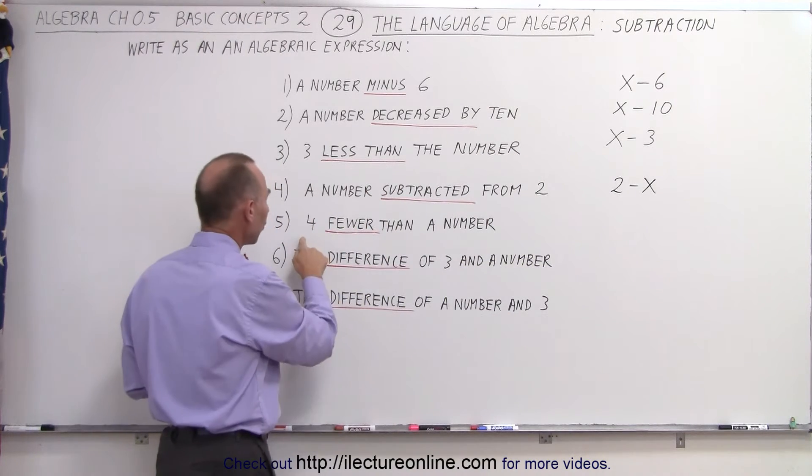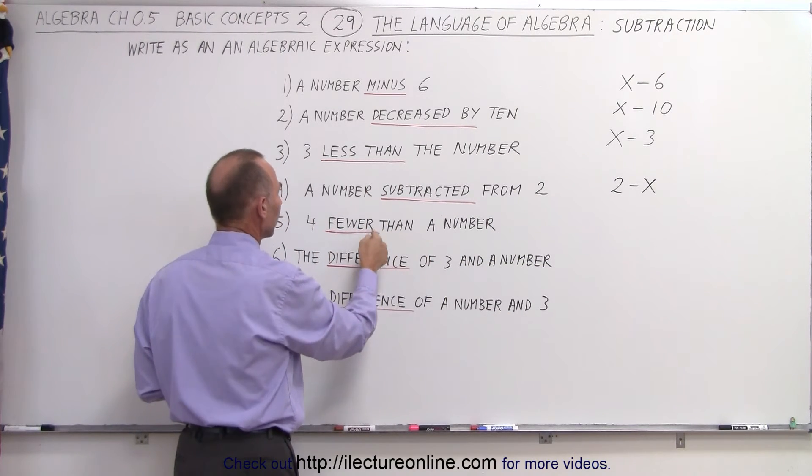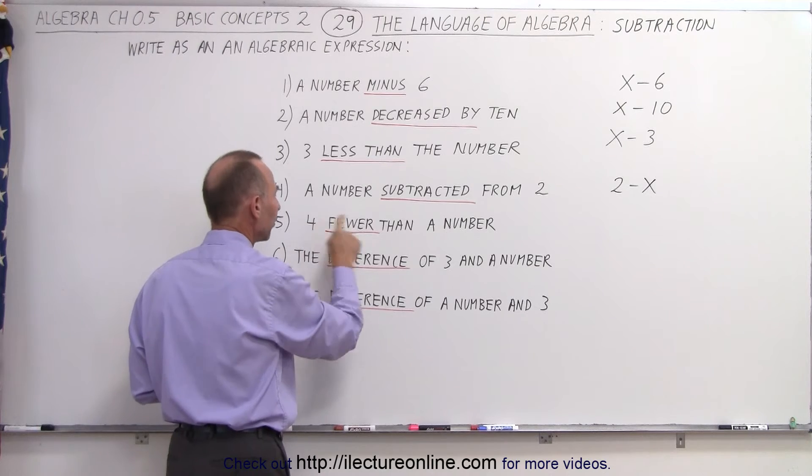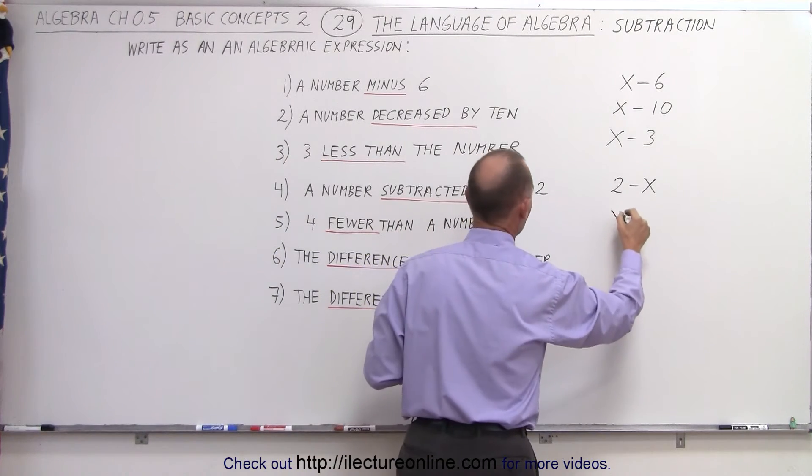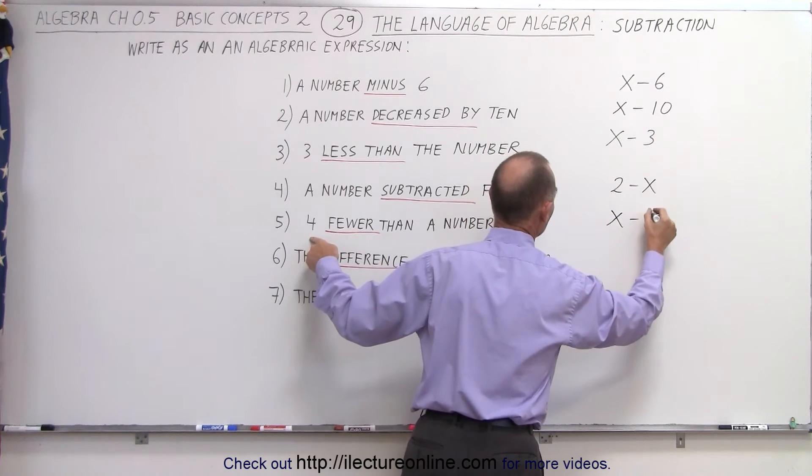Next statement, 4 fewer than a number. So we're going to subtract 4 from the number so that it's 4 less. And so we take a number x and then 4 fewer means minus 4.